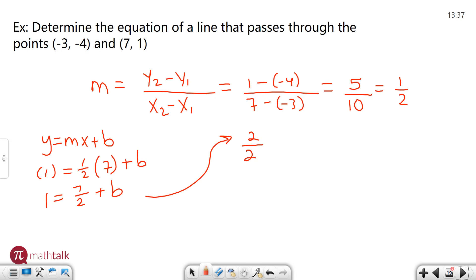Any whole number can be represented as a number divided by itself. The number one can be represented as any number divided by itself. Since I have seven halves I can use the common denominator of two to make it a little bit easier to subtract.